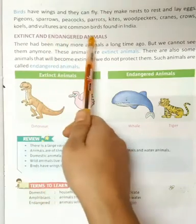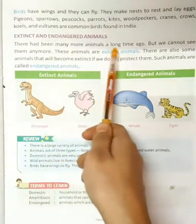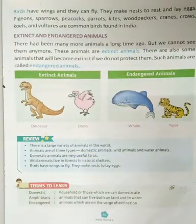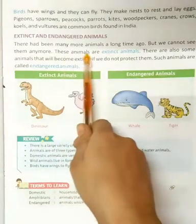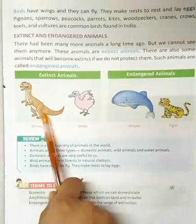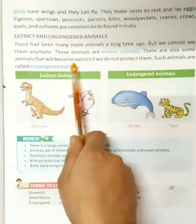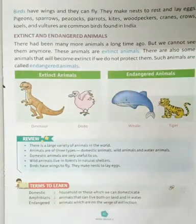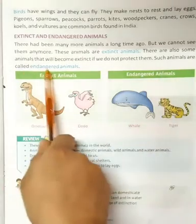Next we have extinct and endangered animals. Endangered means animals which are on the verge of extinction. There were some animals a long time ago that we cannot see anymore — these are extinct animals, like the dinosaur and dodo. Some animals will also become extinct if we do not protect them; such animals are called endangered animals.